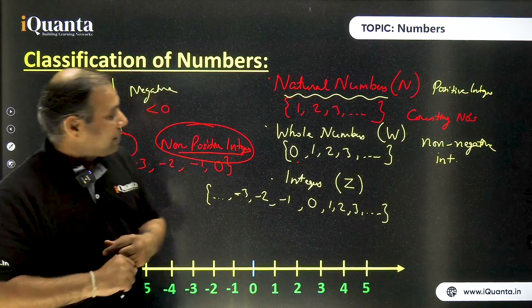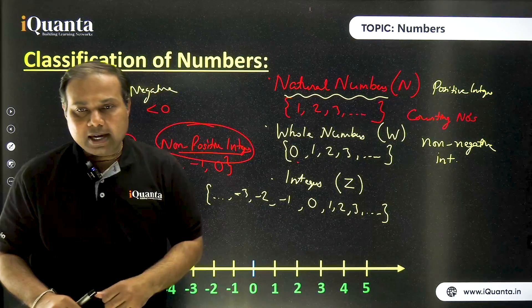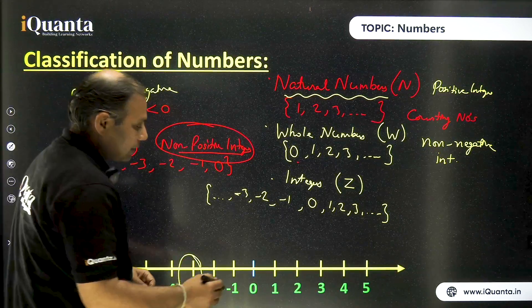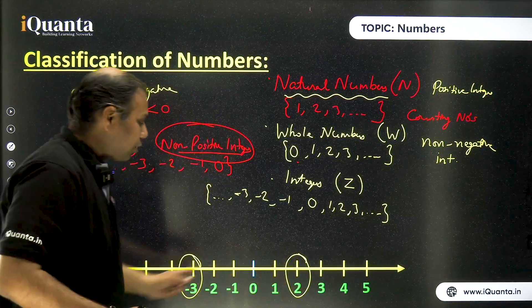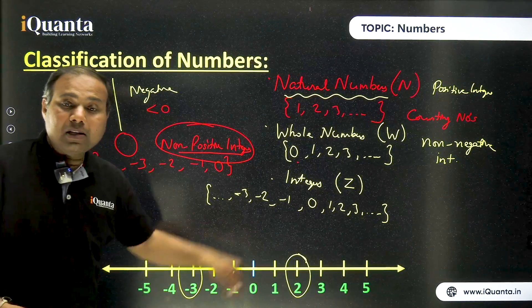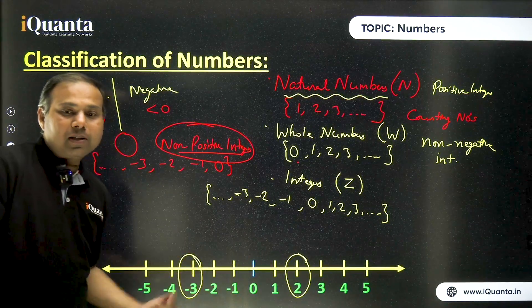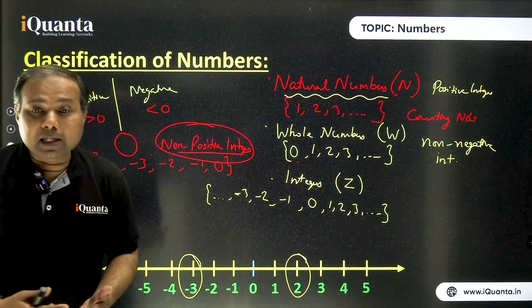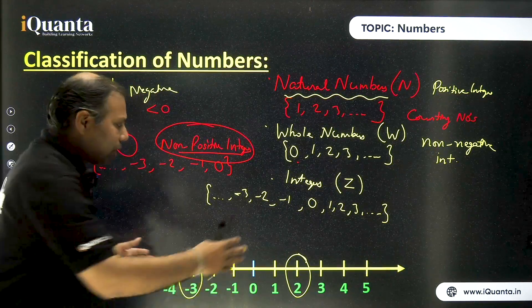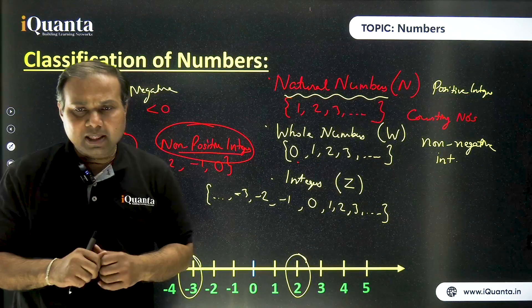One more thing before we go forward. What is the number of integers between any two particular integers? For example, if I take one integer as minus three and other integer is, let's say, two. So these are two particular integers on this number line. So can you calculate how many integers lie between these two integers? When I'm using the term between, that means I'm excluding these two. So between these two integers, except these two integers, how many more integers are there in between? So it's clearly one, two, three and four. Right? So whatever two particular integers I select, there is always going to be finite number of integers between them.